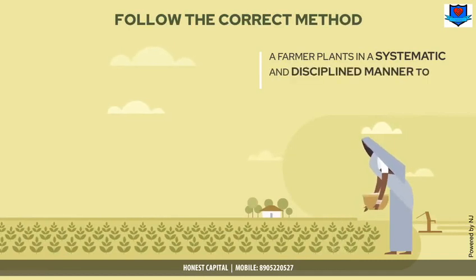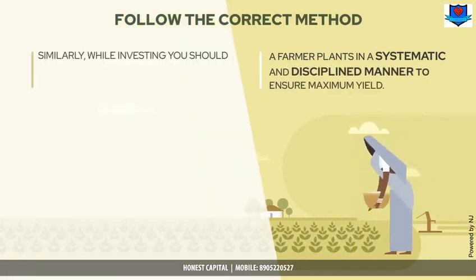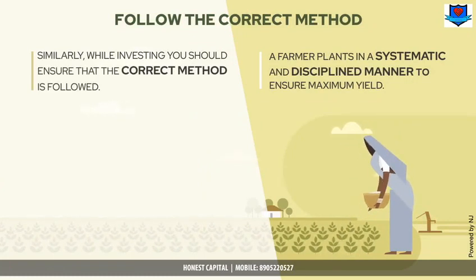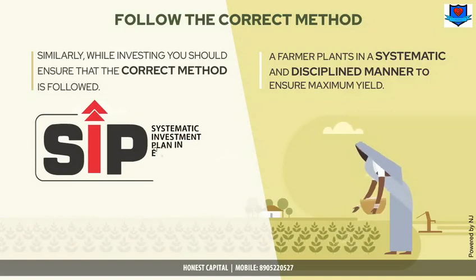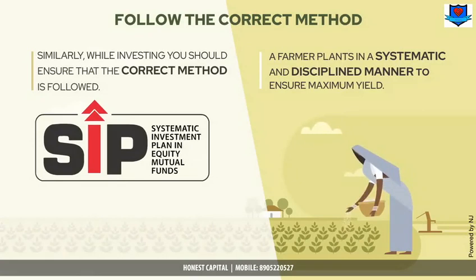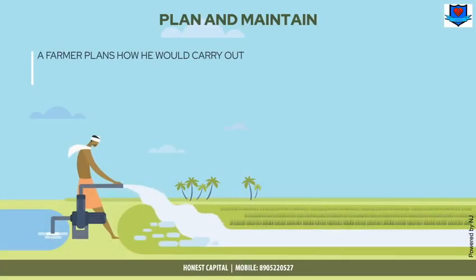Follow the correct method. A farmer plans in a systematic and disciplined manner to ensure maximum yield. Similarly, while investing, you should ensure that the correct method is followed. SIP — Systematic Investment Plan — in equity mutual funds offers a systematic and disciplined approach to investing.